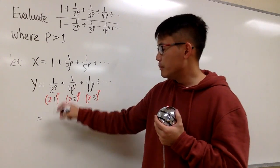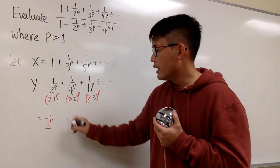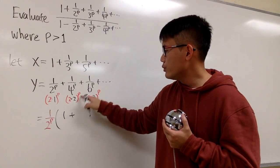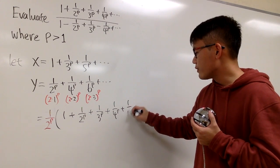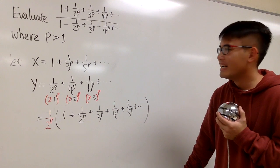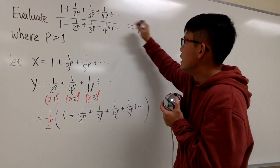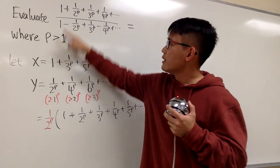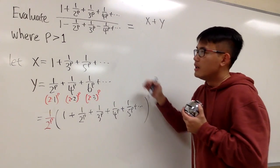So y is going to be the same as — let me factor it out in red — 1 over 2 to the p, and then inside we are going to have 1 over 1 to the p, which is 1, and then plus 1 over 2 to the p, plus 1 over 3 to the p, plus 1 over 4 to the p, plus 1 over 5 to the p, and so on. And on the top, the whole p-series is nothing but x plus y — that's the numerator.